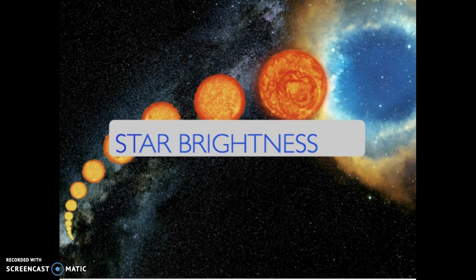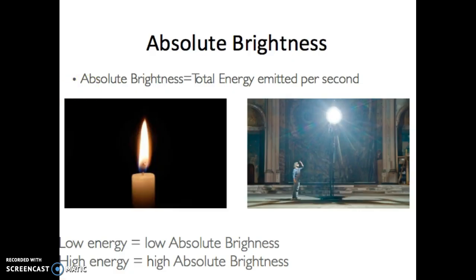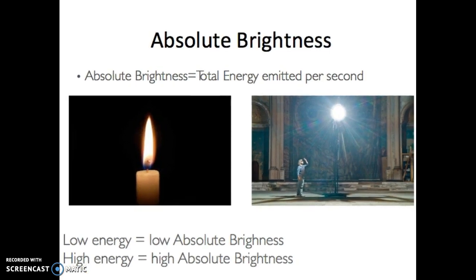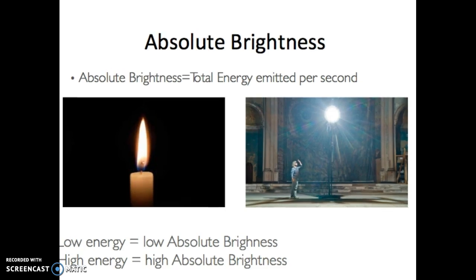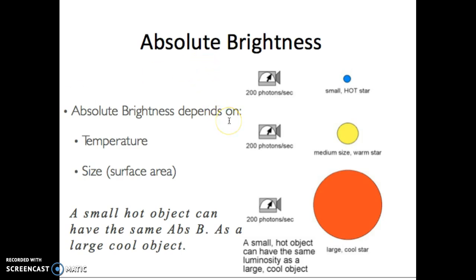So close-up, stars — the Sun — we want to examine these stars, look up into the sky, and learn about astronomy. One thing we know about stars is that they all have something called absolute brightness. Absolute brightness is the total brightness of a star, calculated by the total energy emitted per second. If it's low energy, it has a low absolute brightness; if it's high energy, it has a high absolute brightness.